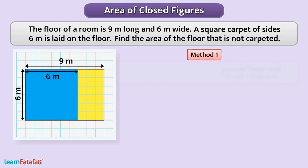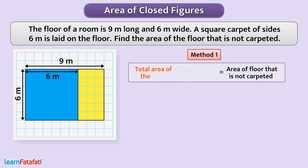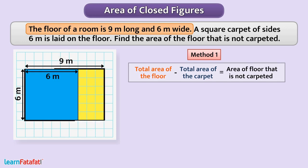First, we can calculate the total area of the floor and total area of the carpet and then, subtract the area of carpet from the area of floor. Here, we have given the length and breadth of the floor. That means, the floor must have a rectangular shape.